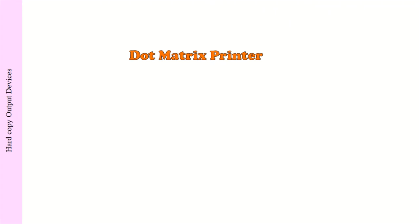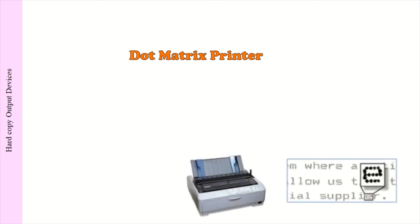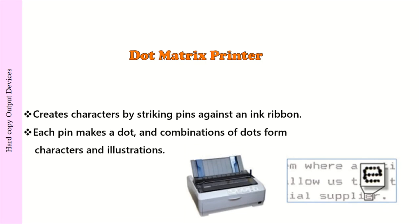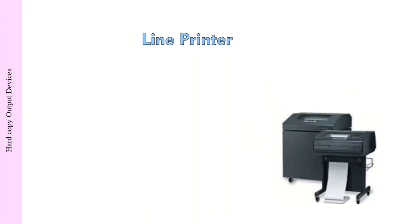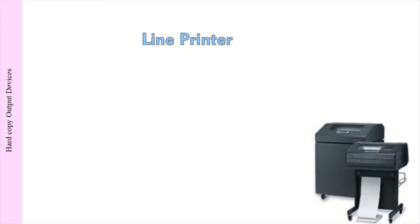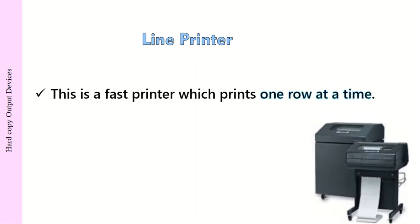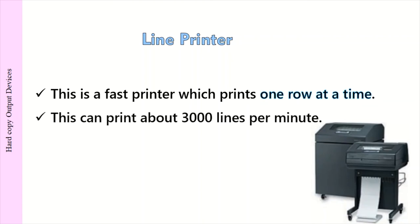Dot matrix printer: creates characters by striking pins against an ink ribbon. Each pin makes a dot, and combinations of dots form characters and illustrations. Line printer: this is a fast printer which prints one row at a time and can print about 3,000 lines per minute.